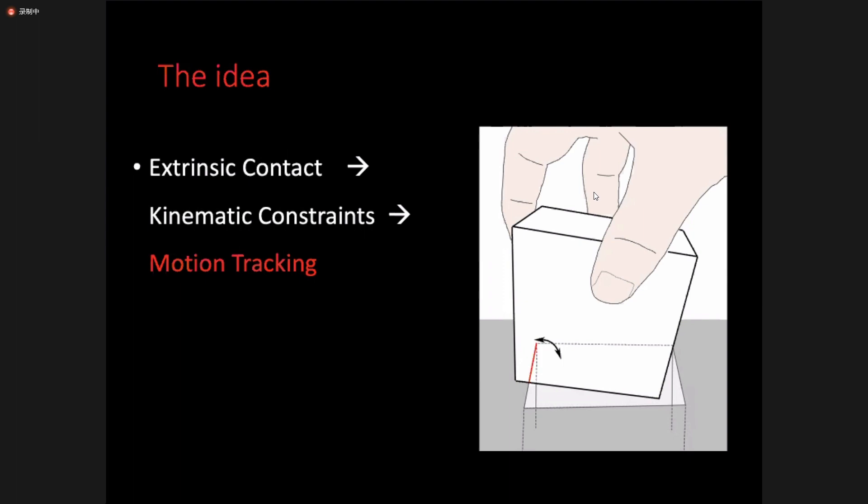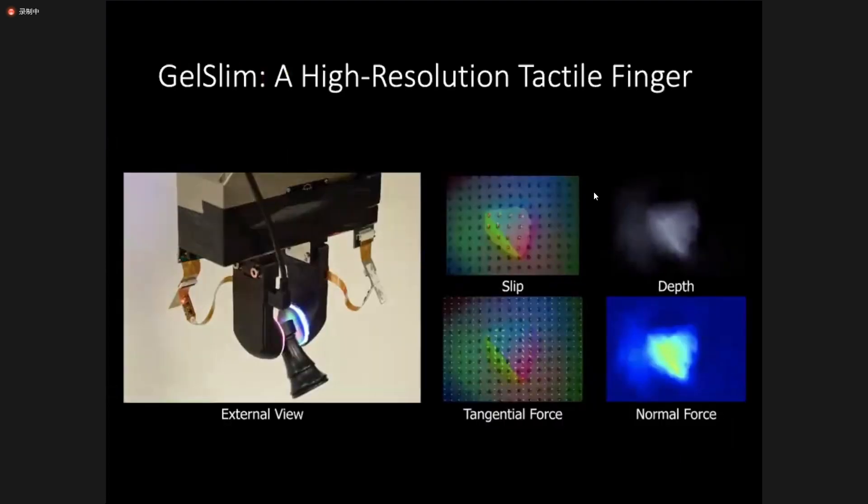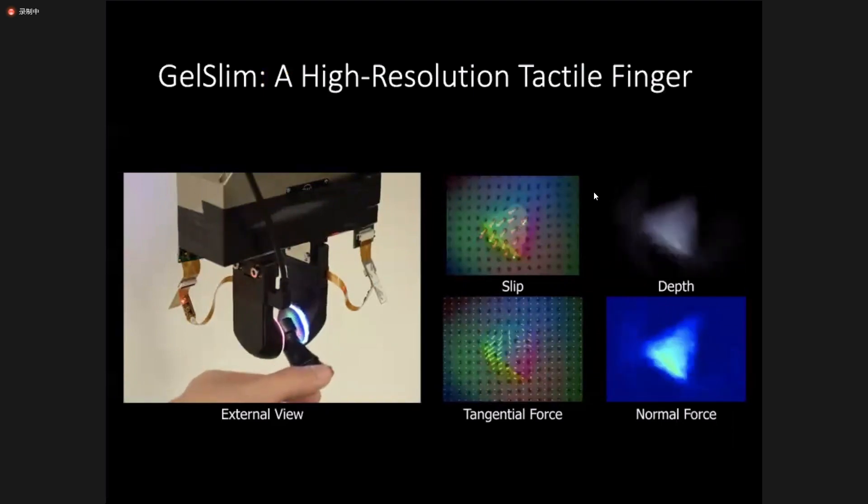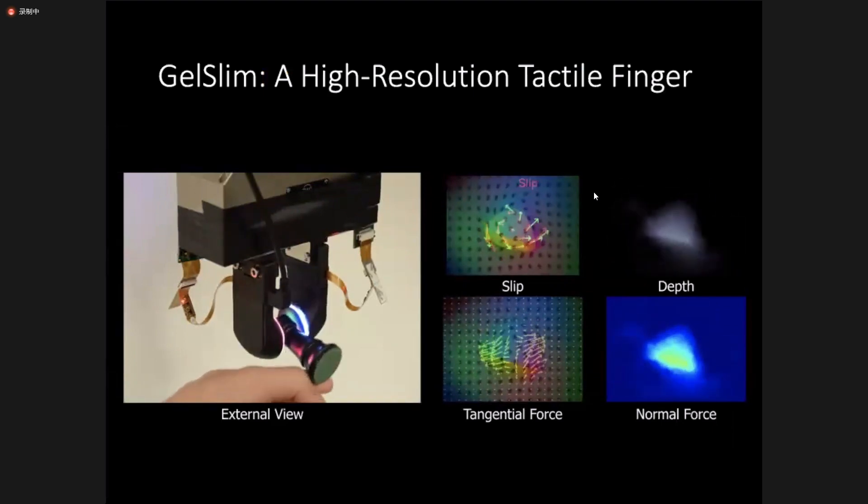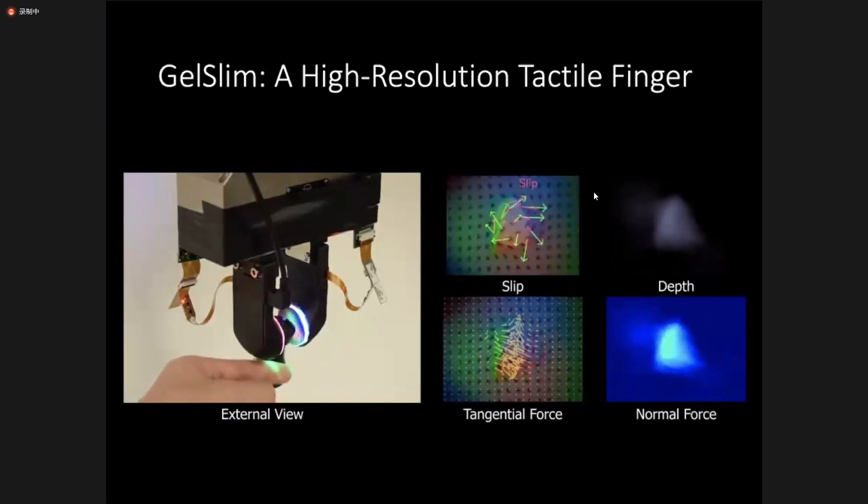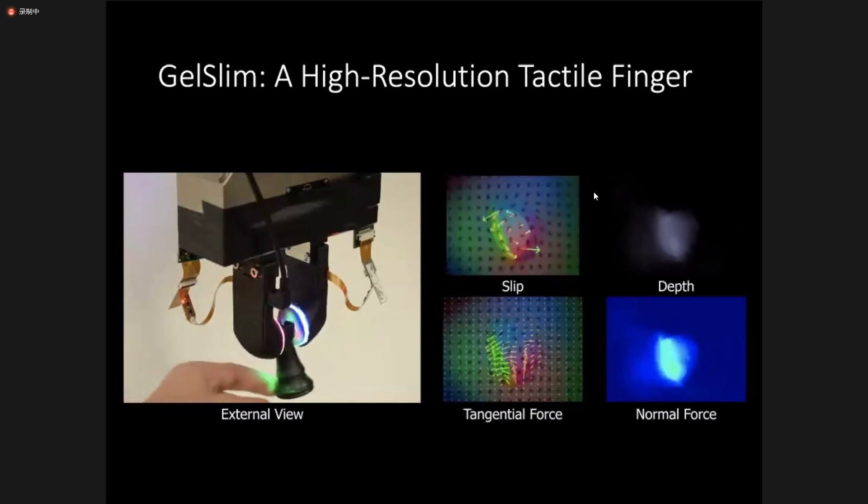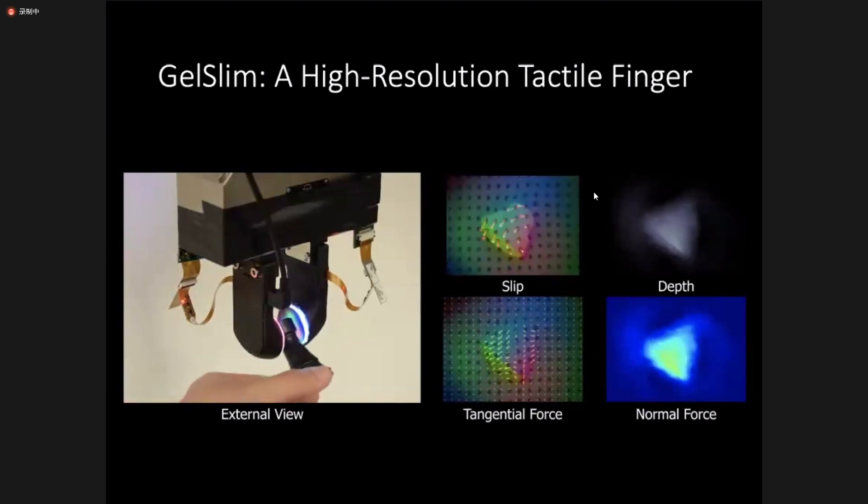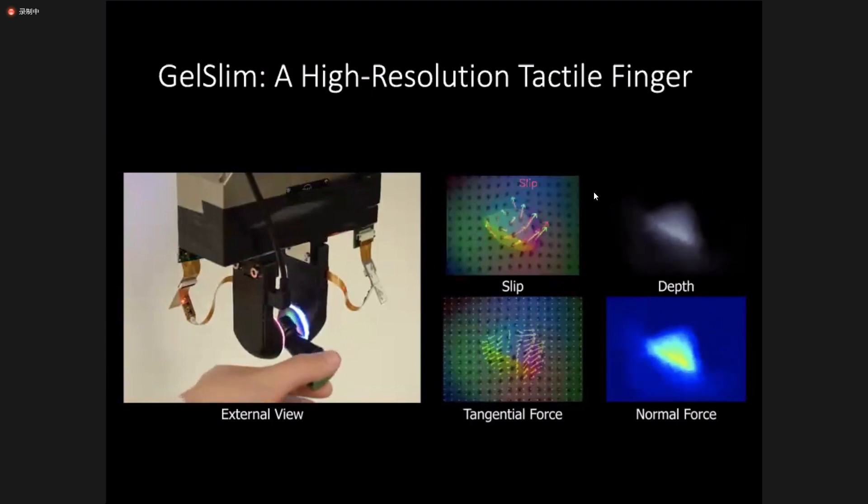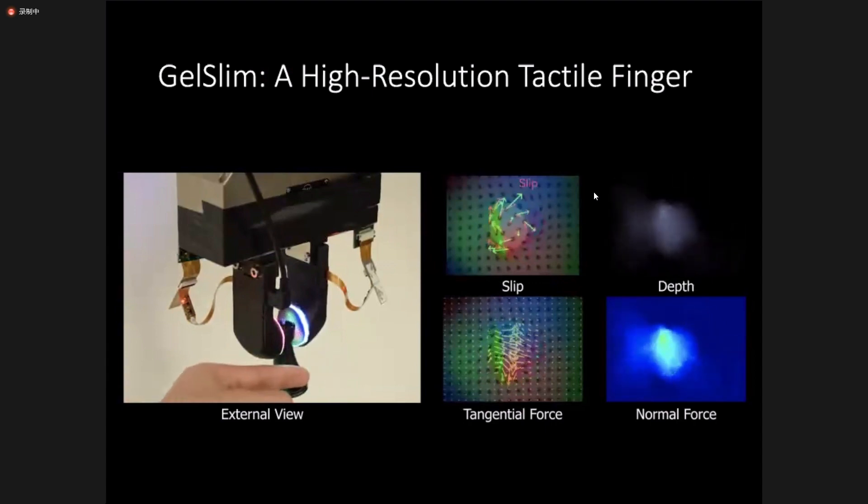So the next problem is how to track the object's motion. As inspired by the human hand, with tactile measurement embedded within the fingers. This is the tactile finger we are using. It's a vision-based tactile sensor. The sensing element is a piece of soft gel, which can be deformed when in touch with an object. And the camera inside the sensor can record the images, from which we can get the deformation of the gel, including the depth and the tangential motion. And we can reconstruct other tactile information from that, such as force distribution or slip detection.